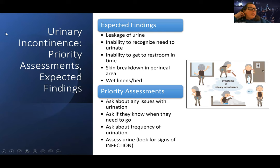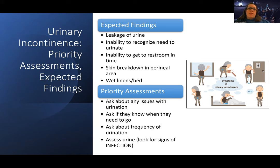Expected findings for a patient with urinary incontinence include leakage of urine, inability to recognize the need to go or get to the restroom in time, skin breakdown in the perineal area — and even though it's expected, it doesn't mean it's okay or not a sign of a problem — as well as wet linens or bed.